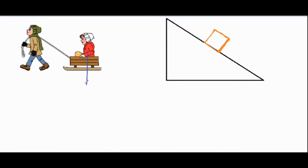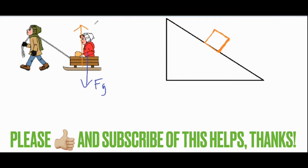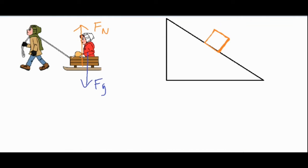We have the force of gravity straight down because of the pull of Earth, the normal force from the ground pushing up perpendicular to support the sled, a force of tension pulling up at an angle, and the force of kinetic friction opposing the slide — assuming the sled is sliding to the left.